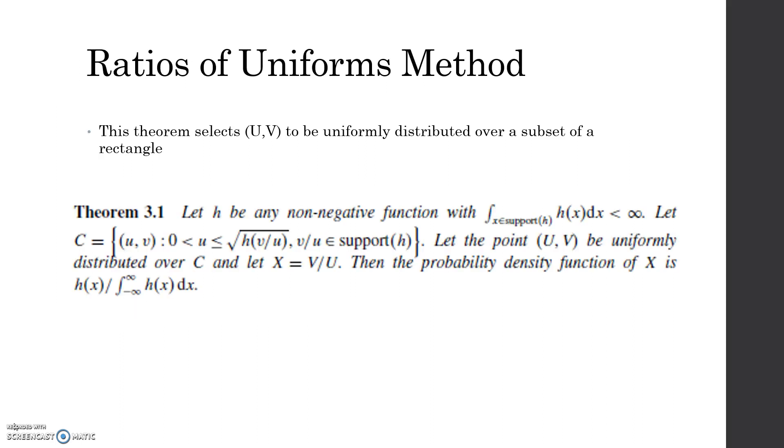This theorem explains how you would go about proving what the distribution of x would be. In this theorem, it selects uv to be uniformly distributed over a subset of a rectangle. The theorem states let h be any non-negative function with integration of x on support of h, and h of x dx has to be less than infinity. Then you define your region c. They defined it as this right here on support of h. Then you let your point u, v be uniformly distributed over your region c, and then you let x equals v over u. Then the probability density function of x is h of x over the integration of negative infinity to infinity of h of x.